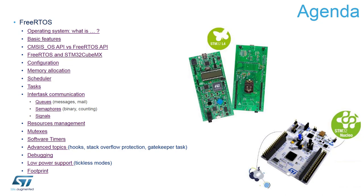Then we will switch to the basic features of FreeRTOS. The next point will be a discussion about the APIs used within FreeRTOS — we will briefly discuss the native FreeRTOS API and then switch to the CMSIS-OS API, which is proposed by ARM and which is an additional layer on top of the FreeRTOS API.